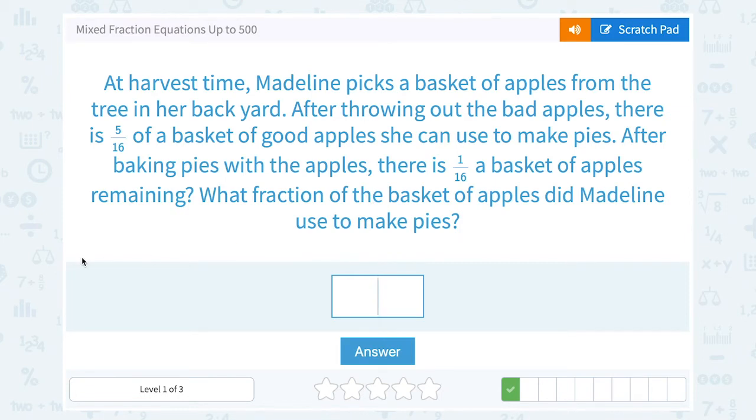At harvest time, Madeline picks a basket of apples from the tree in her backyard. After throwing out the bad apples, there's 5/16 of a basket of good apples she can use to make pies. After baking pies with the apples, there is 1/16 a basket of apples remaining. What fraction of the basket of apples did Madeline use to make pies?